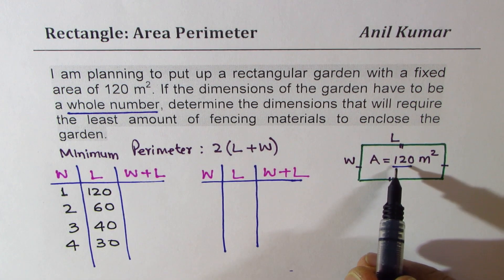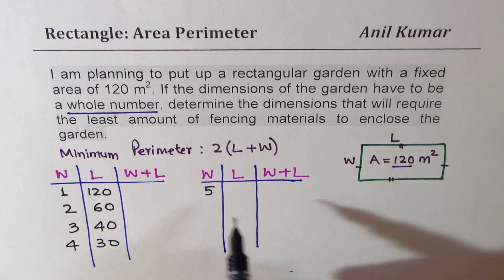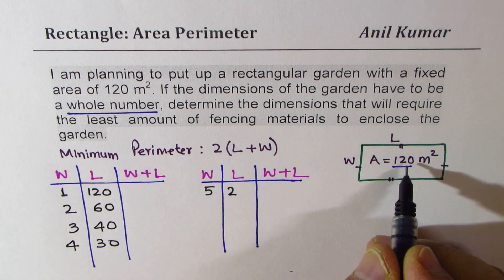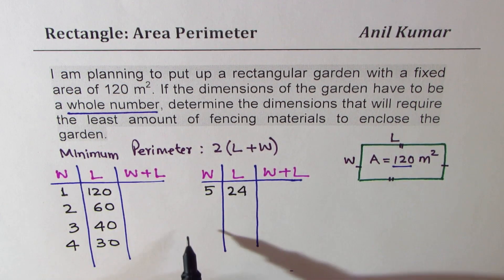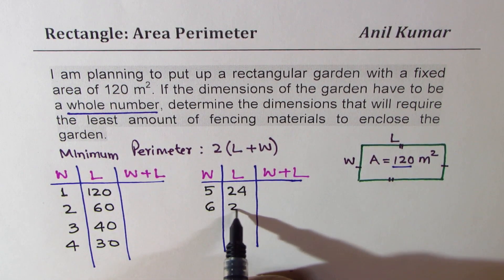So we can also divide 120 by 5. So if I divide by 5, 5 times 24. 6 also we can divide it by, 6 times 20.